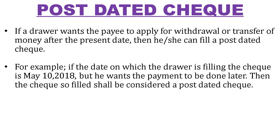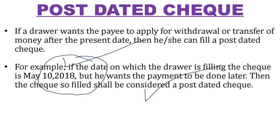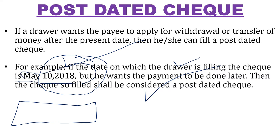The first type of check we are going to discuss is the post-dated check. If a drawer wants to pay or transfer money after the present date, he or she can fill a post-dated check. For example, the check is made on May 10, 2018, but we want it to be payable after that date — this type of check is called a post-dated check.